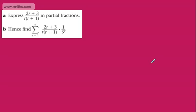In this video, we'll do another question looking at summing finite series using the method of differences. In part A, we ask it to express 2R plus 3 over R, R plus 1 in partial fractions. And in part B, it says hence find the sum from R equals 1 to N of 2R plus 3 over R, R plus 1, multiplied by 1 over 3 to the power of R.